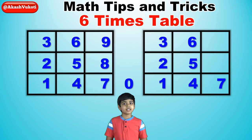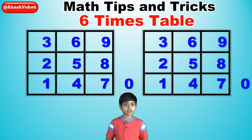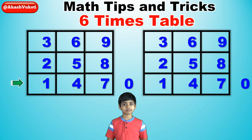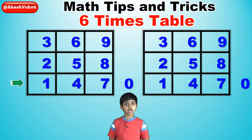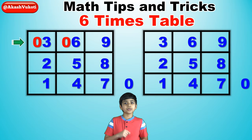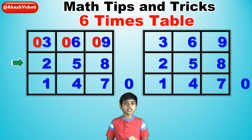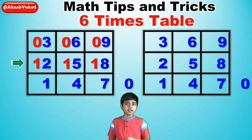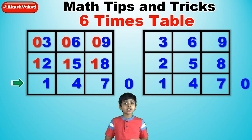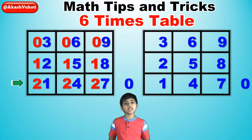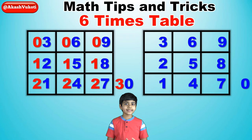Now for the tens digits, we'll split the grid into three parts: top row, middle row, and bottom row. For the tens digits in the top row of the first grid, we write zero, zero, zero. For the tens digits in the middle row, we write one, one, one. For the tens digits in the bottom row, we write two, two, two. Then write a three next to the first of the two zeros.